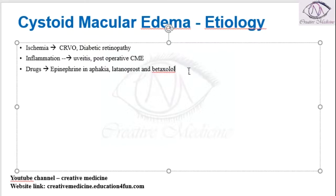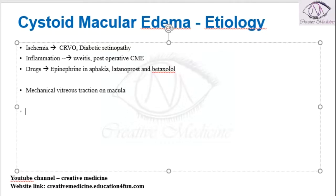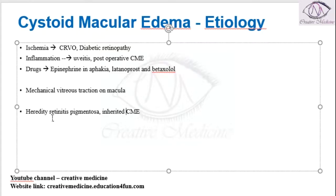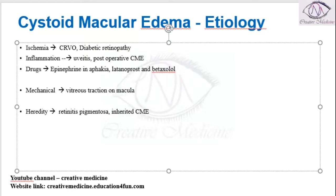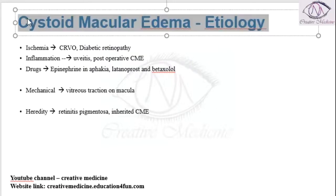Other drug causes include latanoprost or bimatoprost, which are used in glaucoma. It can also occur due to mechanical causes such as vitreous traction on the macula, or due to hereditary causes like retinitis pigmentosa. Inherited cystoid macular edema is also seen in all these cases.